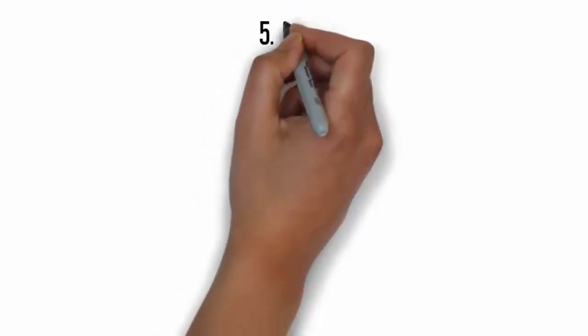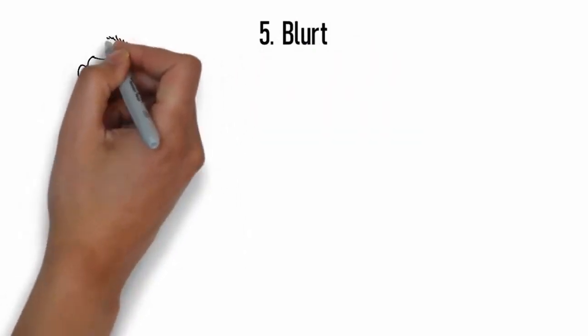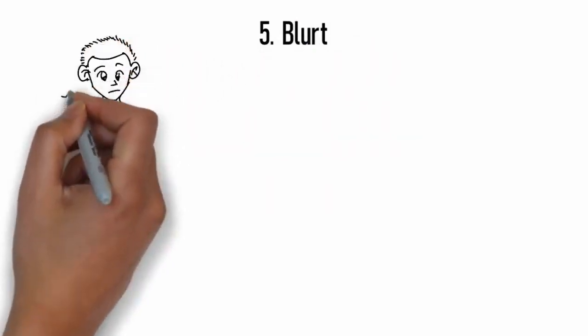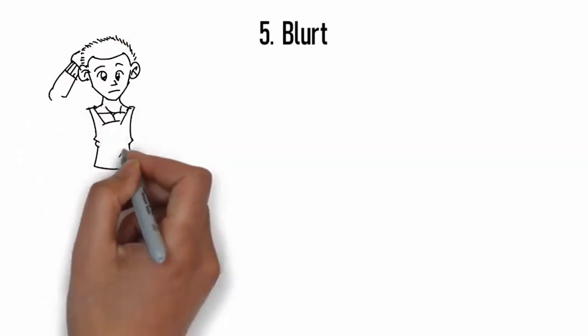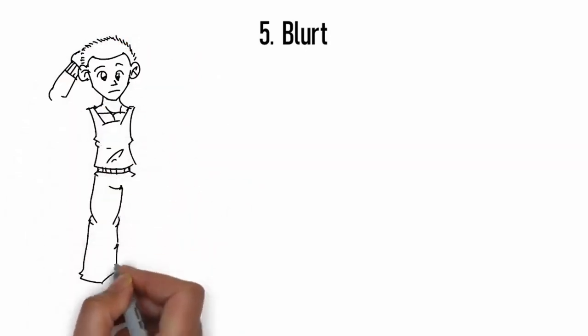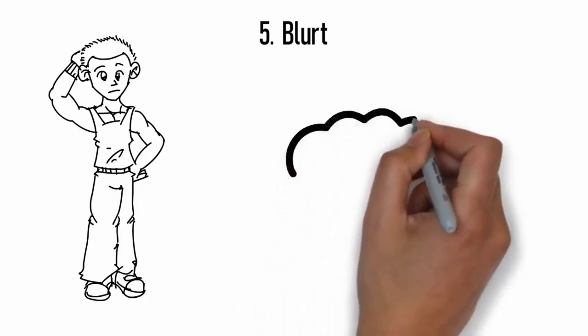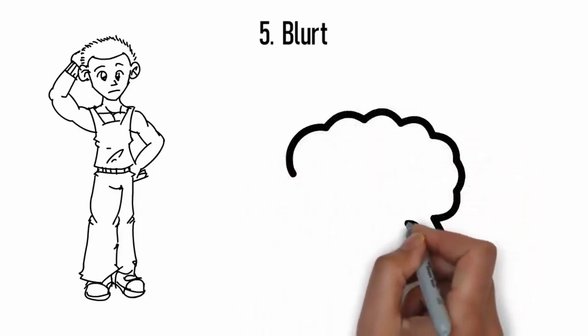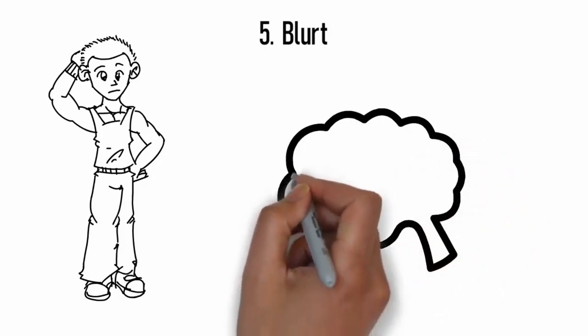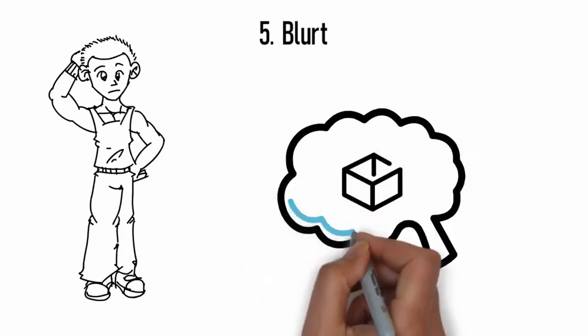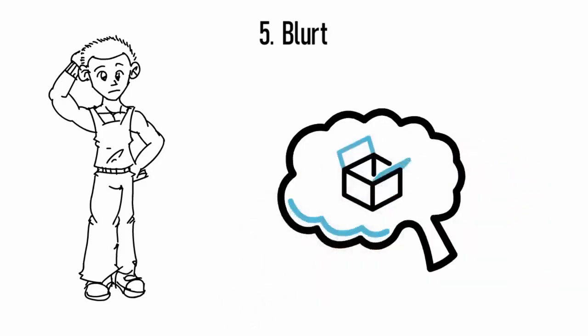5. Blurt. Often, we find it hard to keep a conversation going not because we can't think of anything to say, but because we fear the other person won't enjoy that particular subject, fact, or opinion we have in mind. However, most of the time, this fear is not anchored in reality. This is where blurting comes in. Blurting is a conversational technique which means saying whatever you're thinking about in that moment, instead of censoring yourself. Give it a try and you'll discover that people are not that harsh and they can enjoy a lot of things in a conversation.